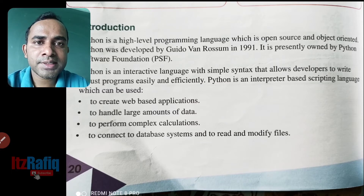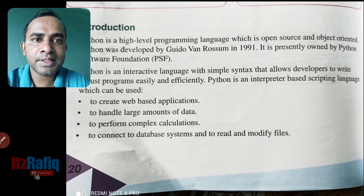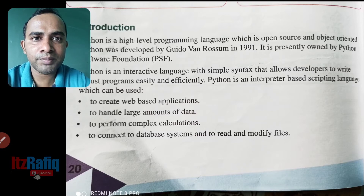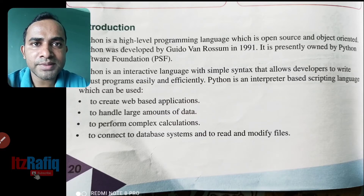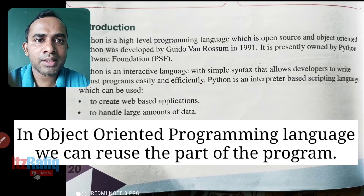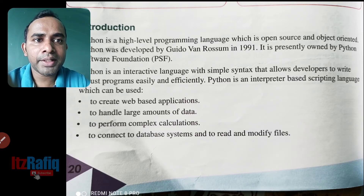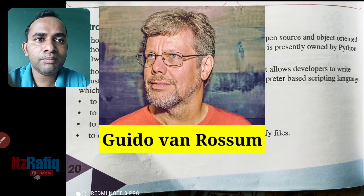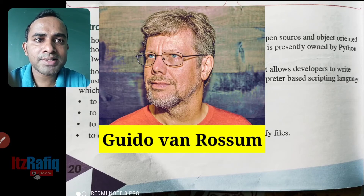Python is object-oriented. If you study computer science in higher classes, you will learn about object-oriented programming. In object-oriented programming, we can use some parts of code again and again, meaning we can save time by reusing parts of programs.